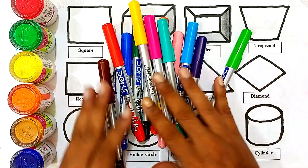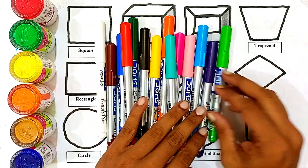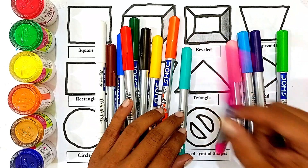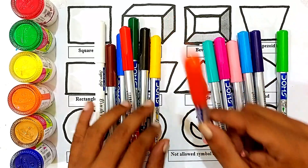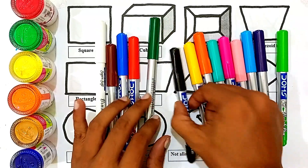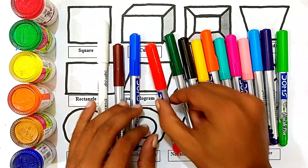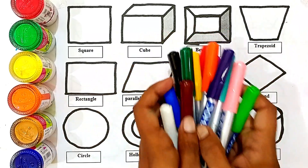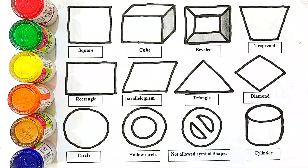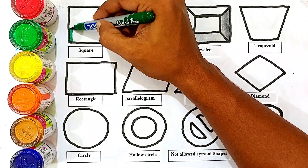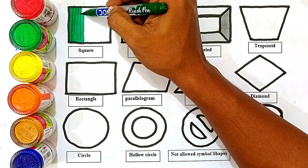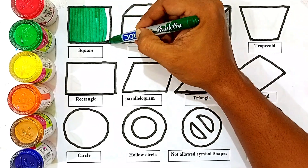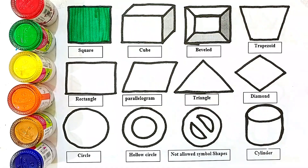Let's learn some colors and coloring these shapes. Light green color, yellow color, violet color, sky blue color, light pink color, sea green color, orange color, yellow color, black color, green color, red color, blue color, brown color, yellow color, blue color.